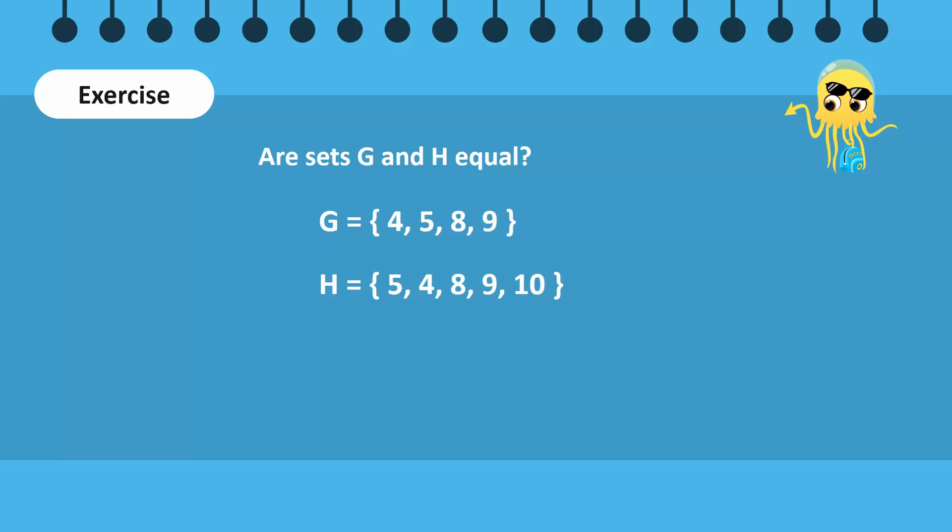Are sets G and H equal? Observe that both the sets have 4, 5, 8, and 9 as their elements. However, set H also contains 10, which is not present in set G.